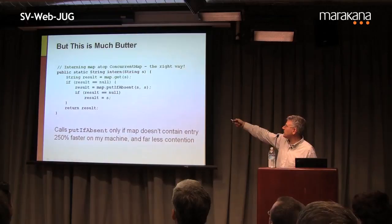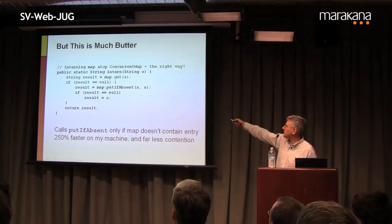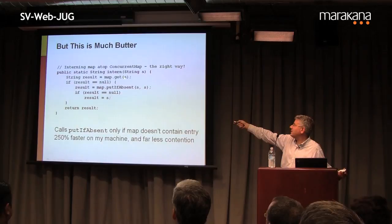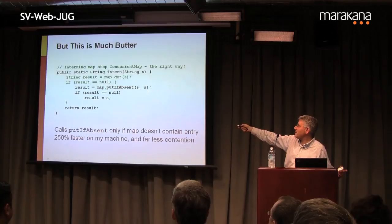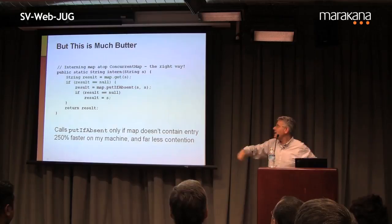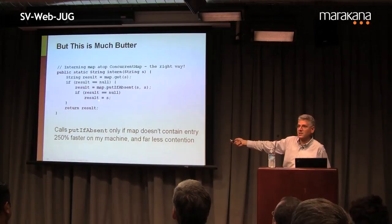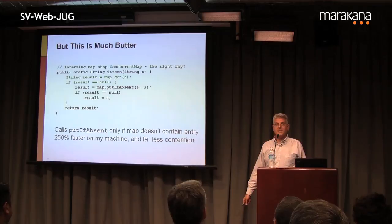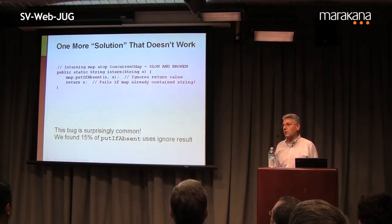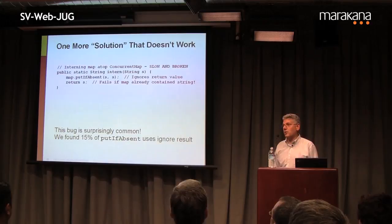The suboptimal version calls putIfAbsent every time even for reads, which causes contention. A get from ConcurrentHashMap causes no contention — any operation can go on in parallel with a get. The best version: String result = map.get(s); if result is non-null, return it immediately. Otherwise call putIfAbsent and handle the rare race condition. On my machine this is 250% faster than the other version and much better from a contention perspective. One more solution that doesn't work at all follows — that code is very badly broken.